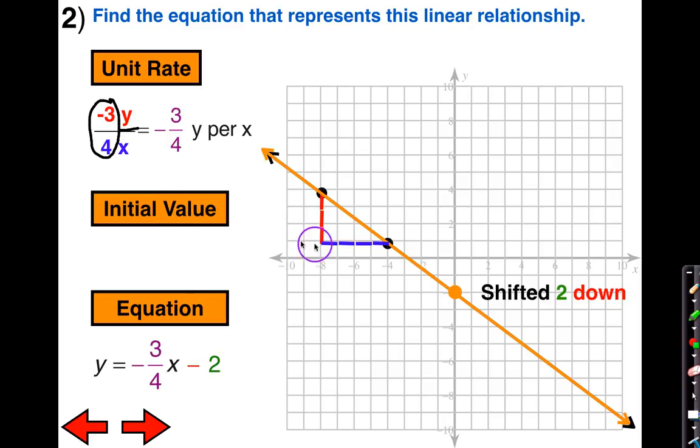Now let's take a look at our initial value. Our initial value starts right here. It's at 0 comma negative 2. Here we would say at x equals 0, y equals negative 2.